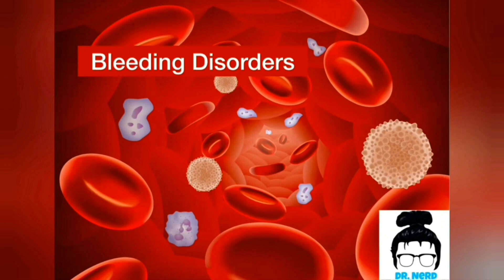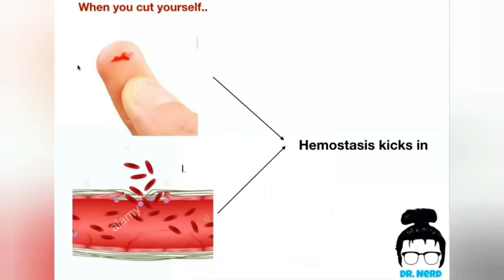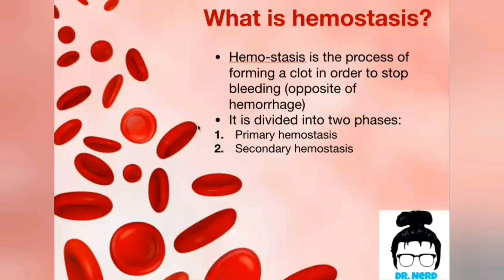That's why we are starting with normal physiology. If you cut your finger, you will notice bleeding, and in a few minutes you will notice that the bleeding stops. This process of cutting off the bleeding through the formation of a clot is called hemostasis. We will discuss how we form a clot in the following slides.